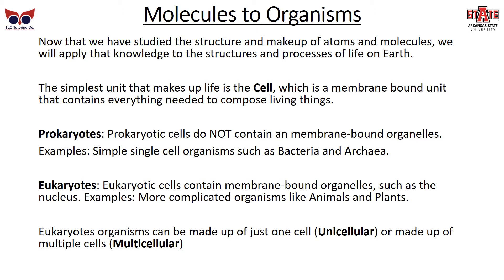Eukaryotic cells contain membrane-bound organelles, such as the nucleus or mitochondria. These are the more complicated organisms you think of, like animals and plants. Eukaryotic organisms can be made up of just one cell — unicellular — or made up of multiple cells — multicellular.